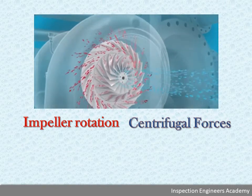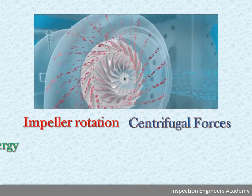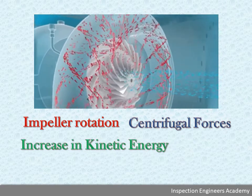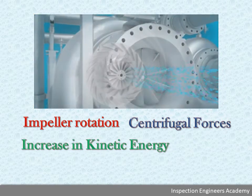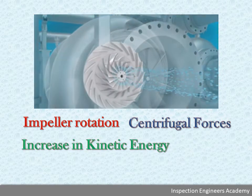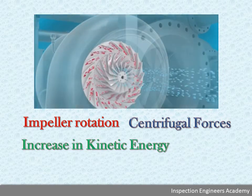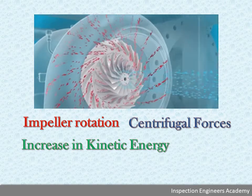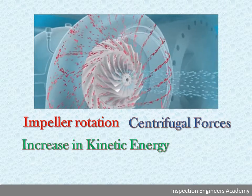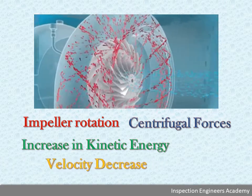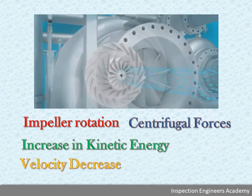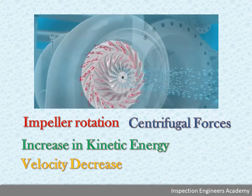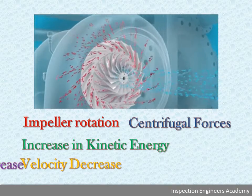Gas passed beneath the radial vanes of the impeller in the radial direction, causing an increase in gas kinetic energy. On the way out through the diffuser, gas velocity is decreased and kinetic energy is converted to an increase in gas pressure.